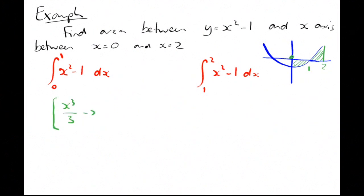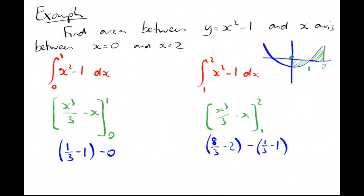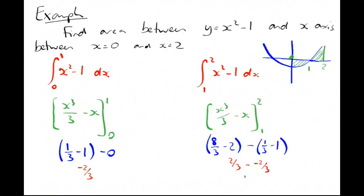That gives us x cubed over 3 minus x, evaluated between 0 and 1, and between 1 and 2. So that gives us one third minus 1 minus 0, and 8 thirds minus 2 minus one third minus 1. The first integral gives minus 2 thirds, and the second integral gives 2 thirds minus minus 2 thirds, which is 4 thirds.